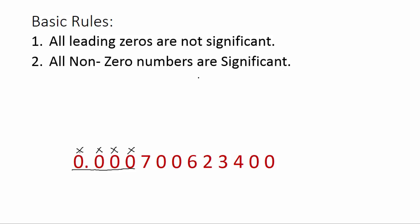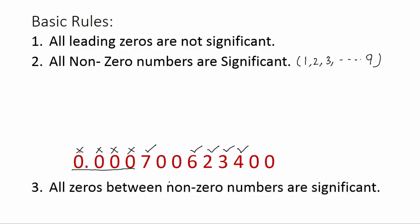Rule 2: all non-zero numbers are significant. Non-zero numbers means 1, 2, 3, up to 9 — all numbers that are not zero. So these digits 7, 6, 2, 3, 4 are all significant.